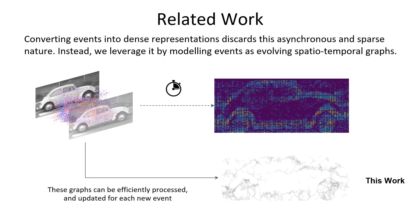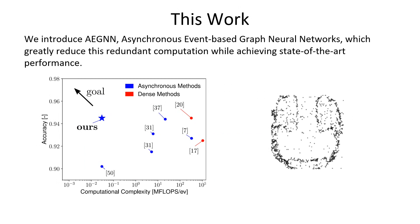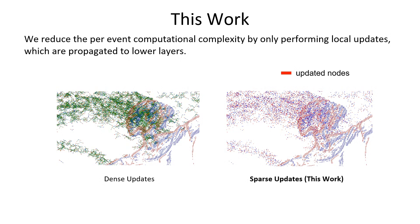In these graphs, each event is represented as a node and edges hold information about the event stream such as proximity in the spatiotemporal space. We introduce Asynchronous Event-Based Graph Neural Networks, in short AGNN, which greatly reduce this redundant computation while achieving state-of-the-art performance.